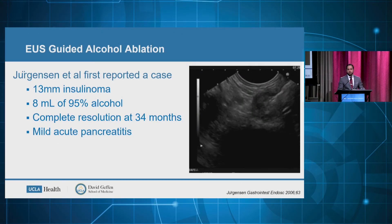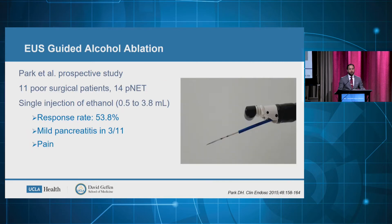Jorgensen and colleagues published the first case report of a 30-millimeter insulinoma which underwent EOS-guided ablation using 95% concentrated alcohol, leading to complete resolution on follow-up. The patient had some mild pancreatitis that resolved later. Another study looked at 11 patients who were poor surgical candidates with 14 neuroendocrine tumors of the pancreas, and alcohol injection was used with a response rate of nearly 54%. Three of those patients developed mild, self-resolving pancreatitis.